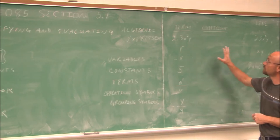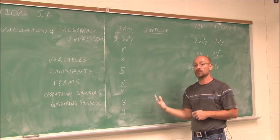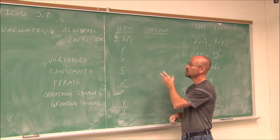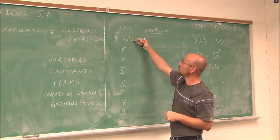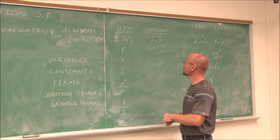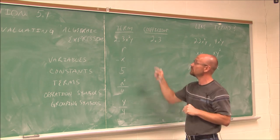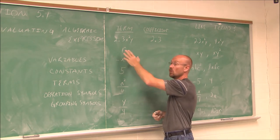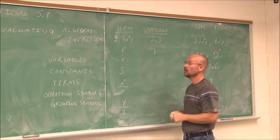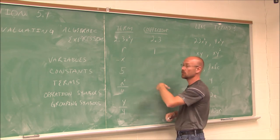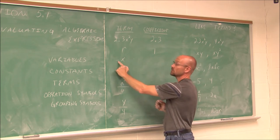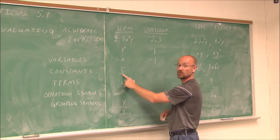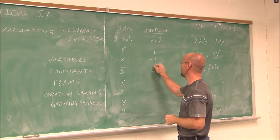Let's review what our terms are and what their coefficients are. The coefficient is the number in front of the term, the number being multiplied by the variable. For example, 2.3 is the coefficient here. If there's no coefficient written in front, we assume 1 — so r has a coefficient of 1. For negative x, just like r, the assumed coefficient is 1, but here it would be negative 1. For a constant like 5, its coefficient is simply the number itself.